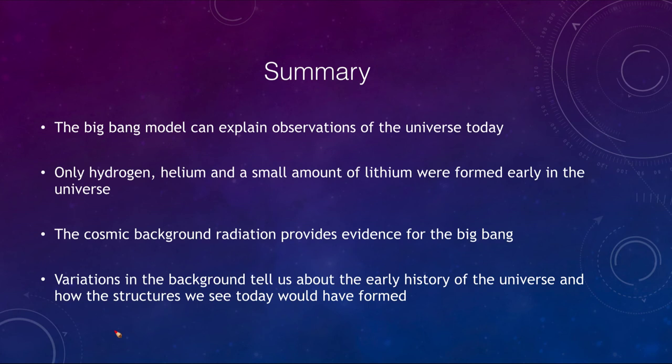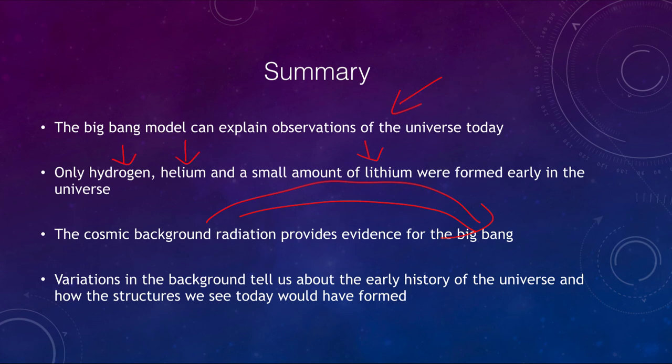In summary, the Big Bang model explains the observations we see of the universe today. In the early universe we formed hydrogen, helium, and maybe a small amount of lithium — the rest was formed in stars. The cosmic background radiation provides evidence for the Big Bang, and variations in this background tell us about the early history of the universe, how the structures we see today formed, and can also tell us the ultimate fate of the universe. That concludes this lecture on the Big Bang — we'll be back next time for another topic in astronomy.